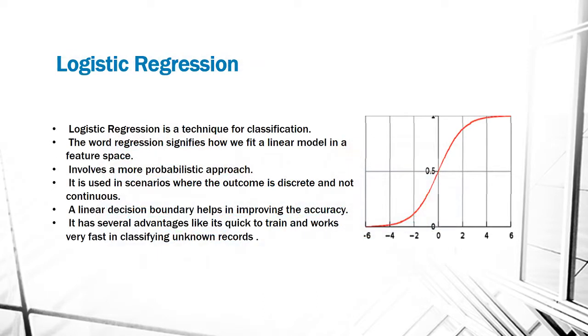The first kind of classifier that I have used is logistic regression. Logistic regression is a technique for classification. The word regression signifies how we fit a linear model in a feature space, so it's a misnomer that involves a more probabilistic approach. It is used in scenarios where the outcome is discrete and not continuous. A linear decision boundary helps in improving the accuracy. It has several advantages: it's quick to train and works very fast in classifying unknown records. The diagram is the logit or transform curve.